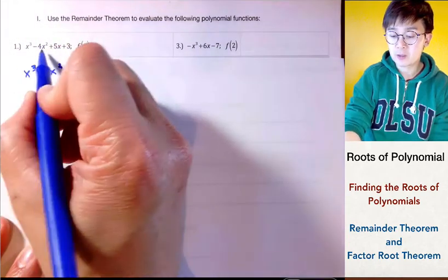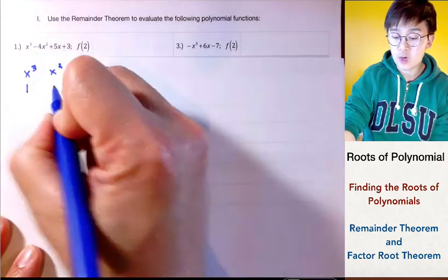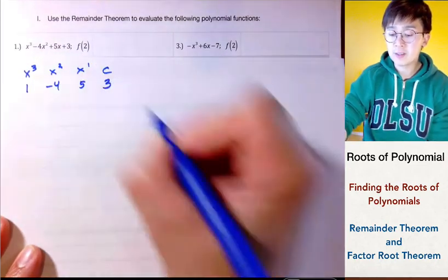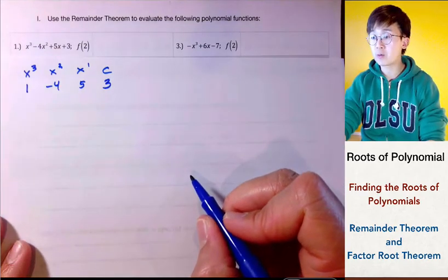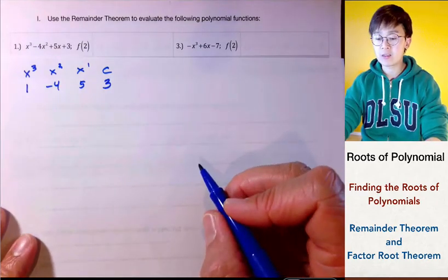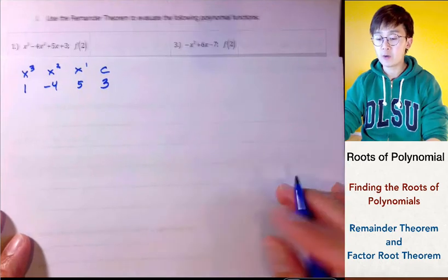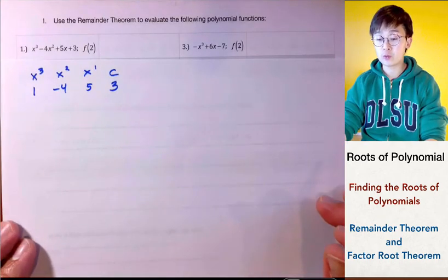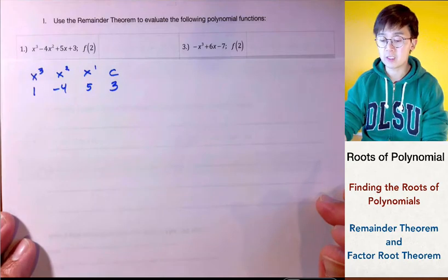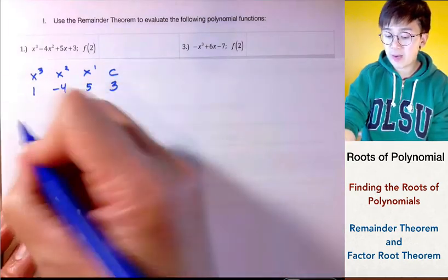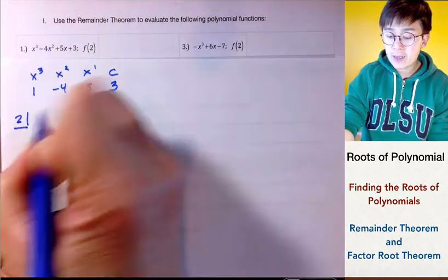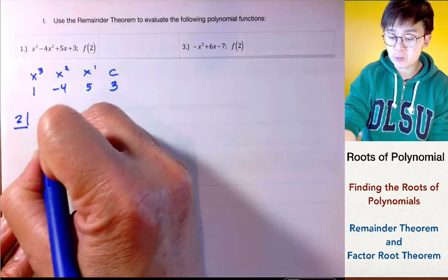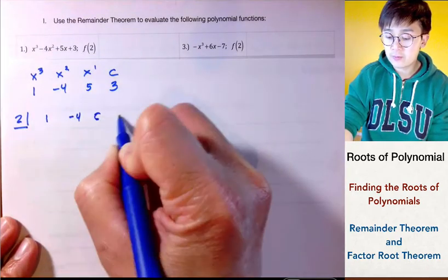In this case you have 1, 2, 3, 4 terms — the coefficients are 1, negative 4, 5, and 3. So we have a complete set of polynomials, which means we are ready to use synthetic division. So 2 will be our divisor and the coefficients are 1, negative 4, 5, and 3.